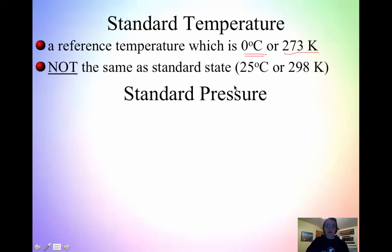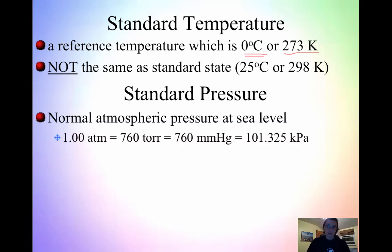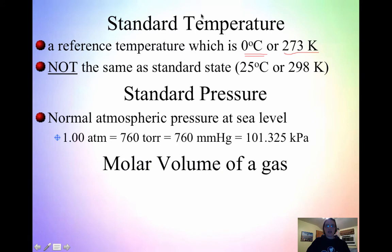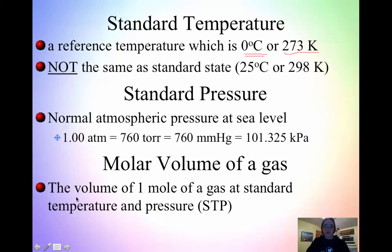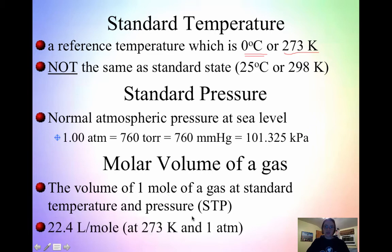Standard temperature and pressure — STP — is not the same as standard state. Standard state is 25 degrees Celsius; STP is 0 degrees Celsius. Standard pressure is normal atmospheric pressure: 1 ATM, or 760 torr, or 760 millimeters mercury, or 101.325 kPa. STP is 273 Kelvin and 1 ATM. The molar volume of a gas: the volume of one mole of a gas at STP is equal to 22.4 liters. To use molar volume you must be at STP — 273 Kelvin and 1 ATM. If not, you have to use the ideal gas law or something else.